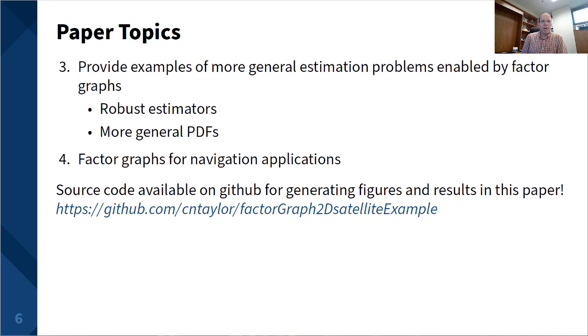With the basics of a factor graph in hand, we then introduce some more complex estimation scenarios and how to solve these in a factor graph. We particularly focus on robust estimators, which are used to reject bad measurements in a factor graph, and on the capability of a factor graph to handle non-Gaussian probability density functions, including discrete probability distributions.